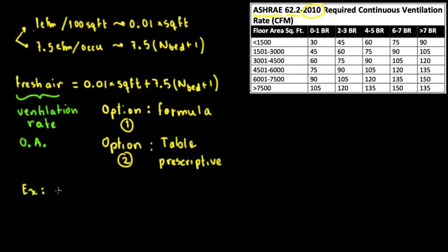If we have a house that has three bedrooms and is 2,500 square feet, we need to obtain what is the required fresh air for proper ventilation, or ventilation rate, or outside air. Since we were talking about the options, option number 1 is the formula.